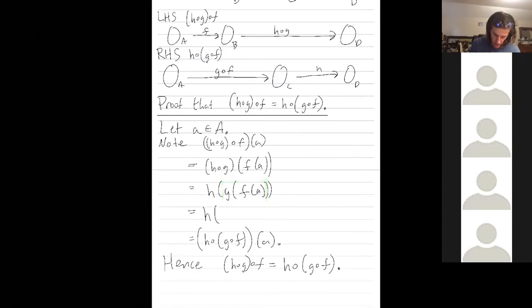So leave the h of untouched, but g of f of a by definition is g composed with f of a. And then what is h of g composed with f of a? That's just h composed with g composed with f applied to a.